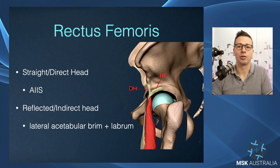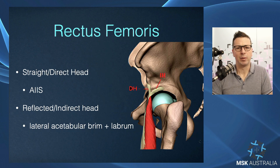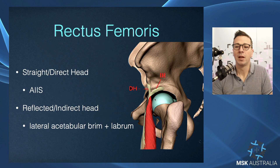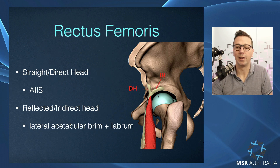The other structure we need to assess with hip flexor related groin pain is the rectus femoris. Your rectus femoris has two heads: its direct head, which comes straight off the anterior inferior iliac spine and runs straight down into the muscle, and our reflected or indirect head, which originates on the anterior lateral acetabular brim and forms the lateral component of the lateral labrum.